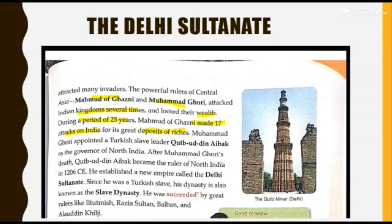Mohammed Ghazni appointed a Turkish slave leader named Qutb Uddin Aibak as the governor of North India. Qutb Uddin Aibak became the ruler of North India and established a new empire known as the Delhi Sultanate.